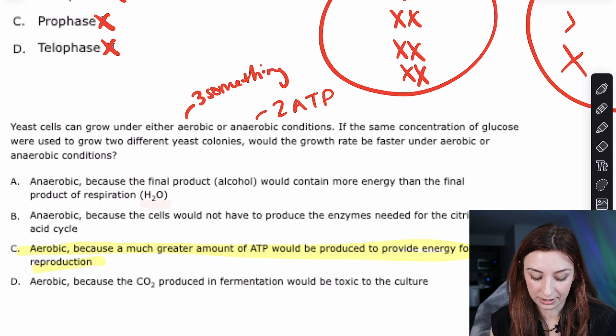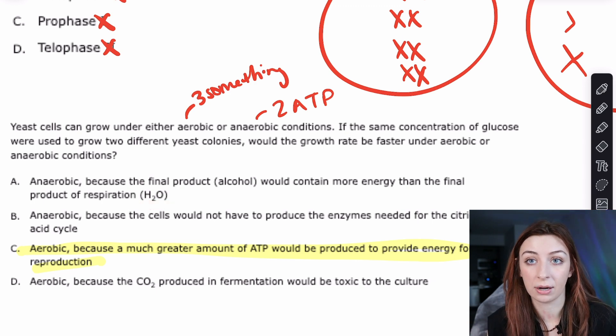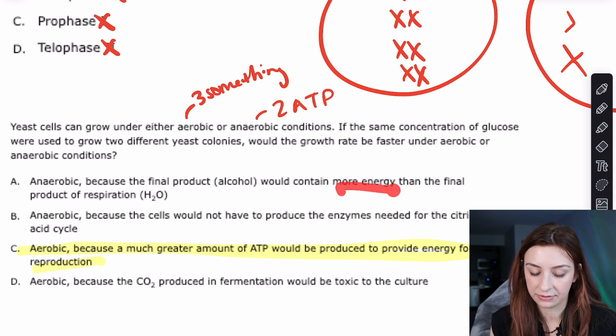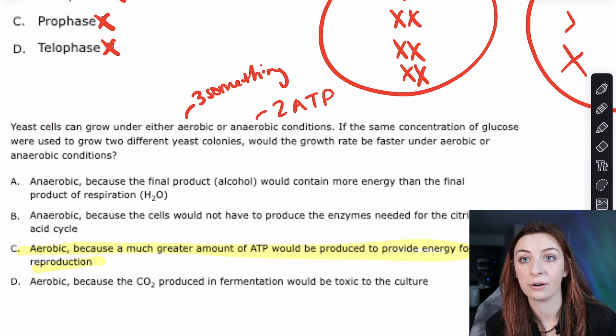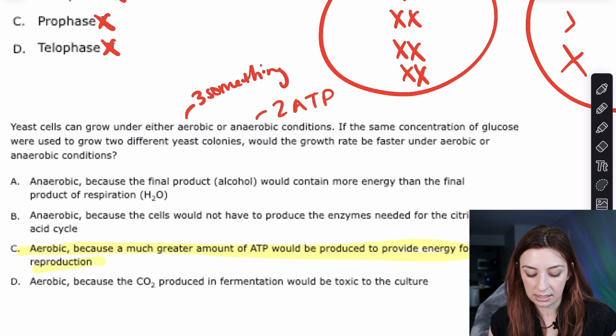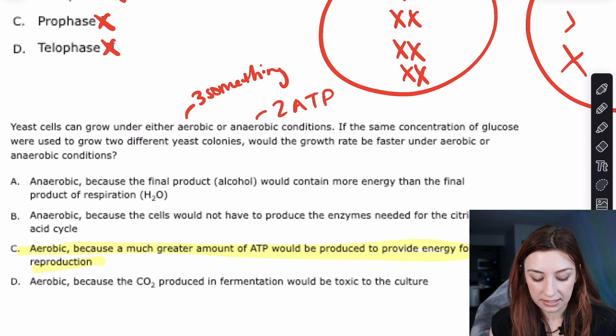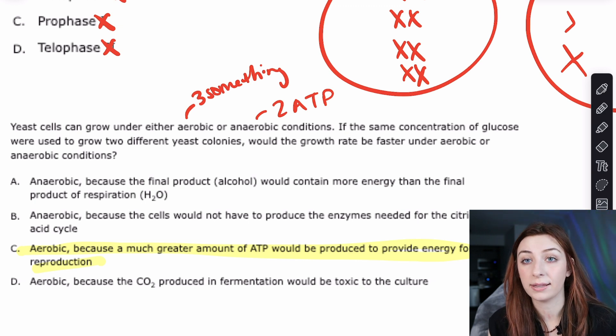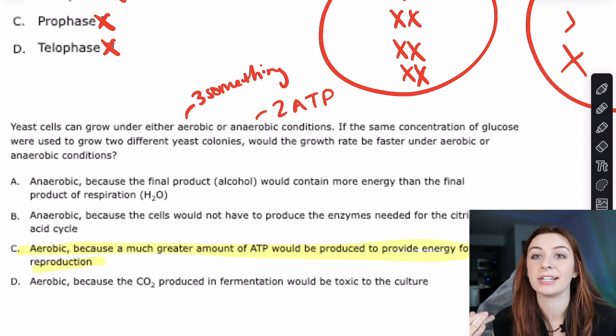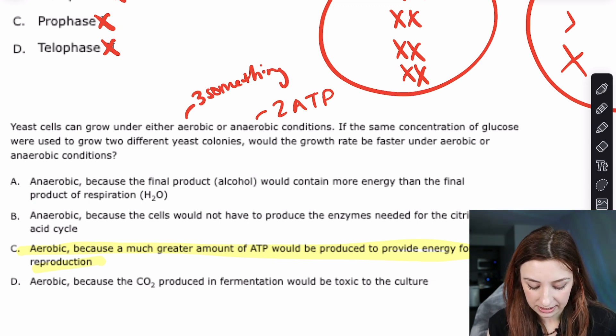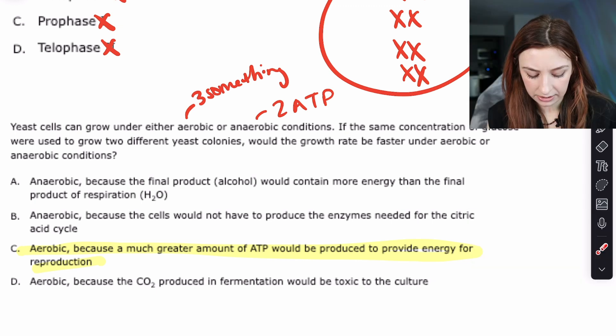Let's look at why the other answer choices are wrong. A says anaerobic because the final product alcohol would contain more energy than the final product of respiration which is H2O. The final products are byproducts. They do not matter. We are not getting any more energy out of the final product. In fact, we want the final product to be really low energy because that means that we got all the energy out of the glucose to begin with. B says anaerobic because the cells would not have to produce the enzymes needed for the citric acid cycle. I'm guessing if the yeast cells can grow under either aerobic or anaerobic conditions that they'd probably already have those enzymes. It's literally like 15 or 20 times more ATP in aerobic respiration that I feel like they're not going to mind making a couple of enzymes. D says aerobic because the CO2 produced in fermentation would be toxic to the culture. I don't think so. That's isn't that how bread is literally made like yeast and CO2? So yeah, we're going to be going with C here. Don't overthink it.